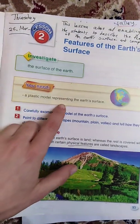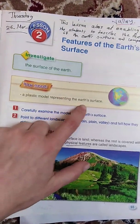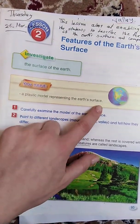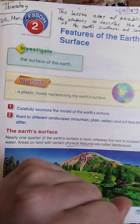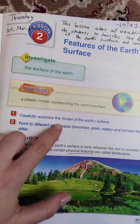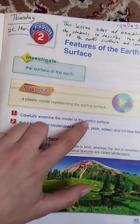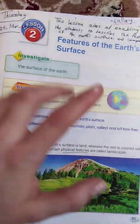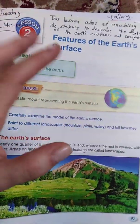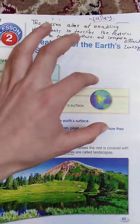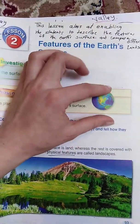The plastic model represents the earth surface. Carefully examine the model of the earth surface. Look at the colors of the earth.